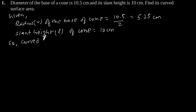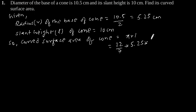So curved surface area of cone is equal to pi R L. Putting the value of R and L, we will get 22 by 7 into 5.25 into 10, which is equal to 22 by 7 into 52.5, which is equal to 165 cm square.